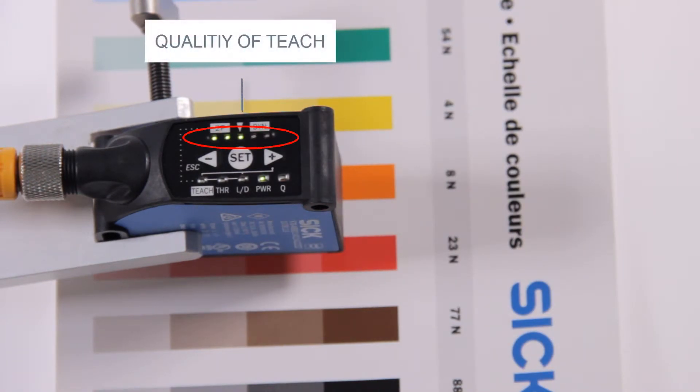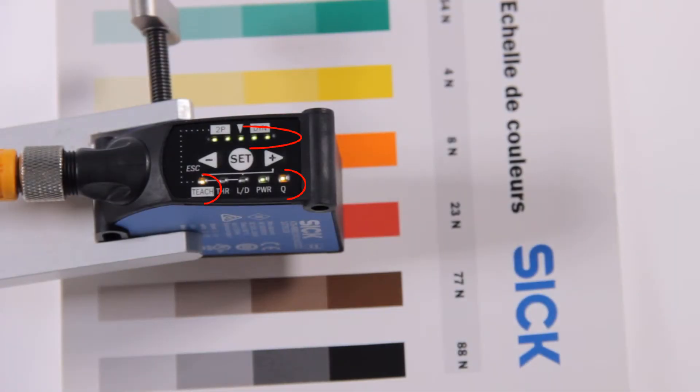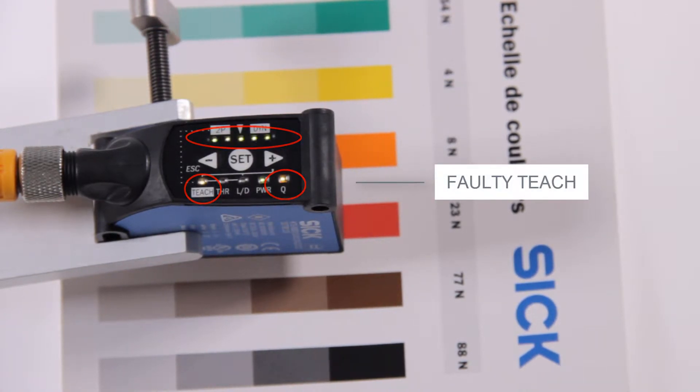The 5 LED bar graph indicates the quality of teach, where 5 is the best result. A blinking bar graph as well as blinking yellow LEDs indicate a faulty teach. In this case confirm with SET and redo the teach.